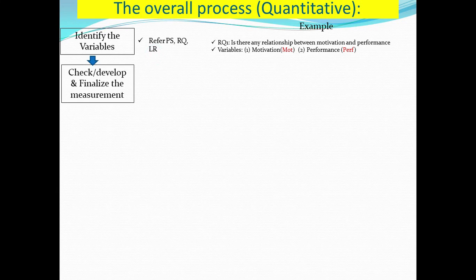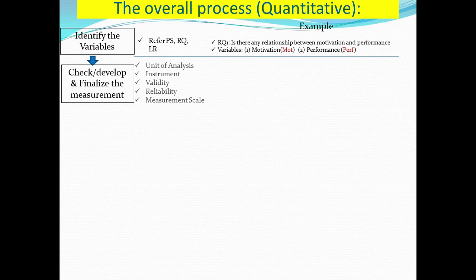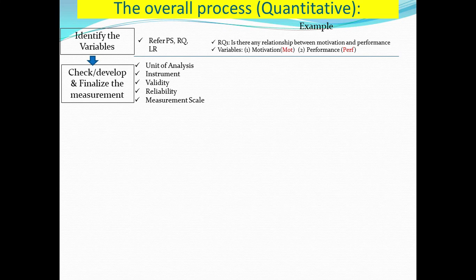The second step is that we have to develop and finalize the measurement. All the variables — motivation and performance — should be measured. In this second stage, there are several things we have to identify: first, the unit of analysis; second, the instruments; those instruments must be valid and reliable; and last, we have to finalize the measurement scale.